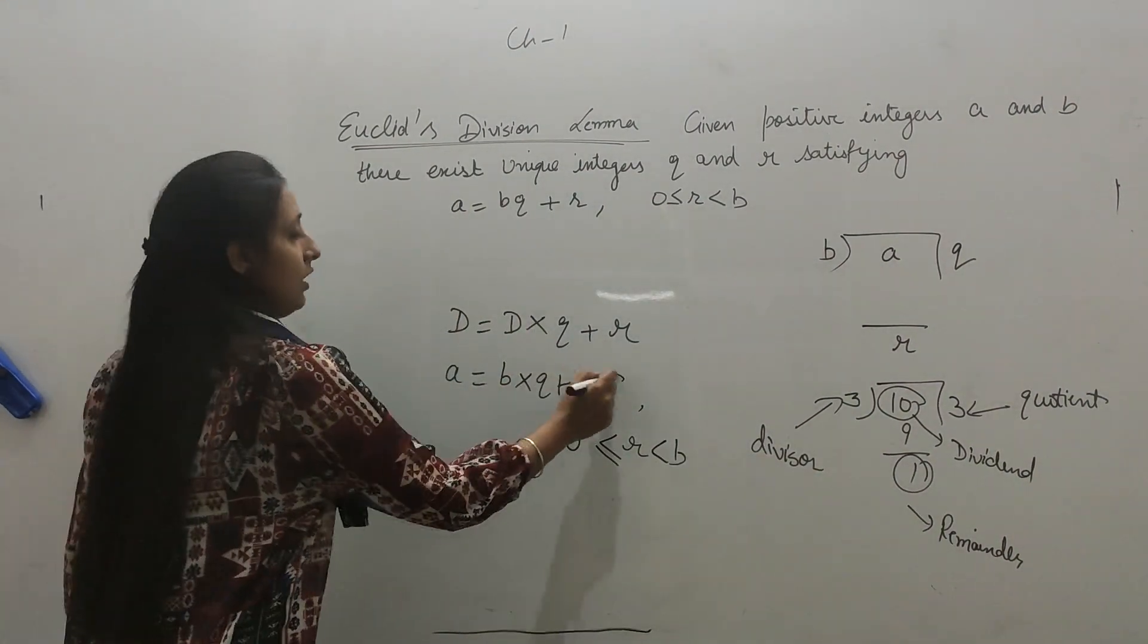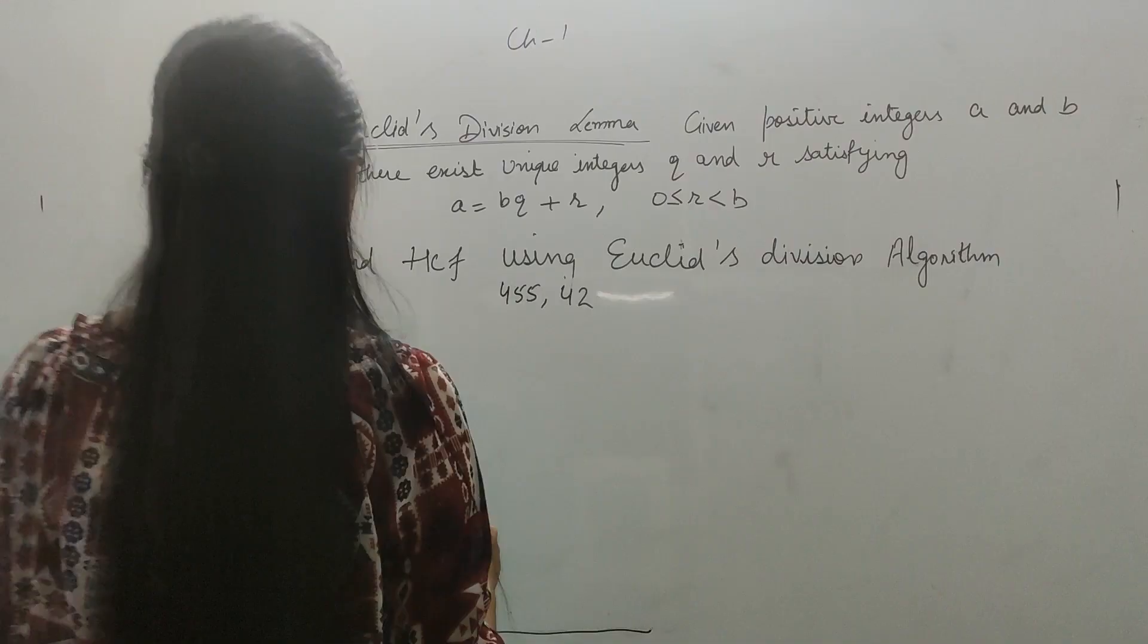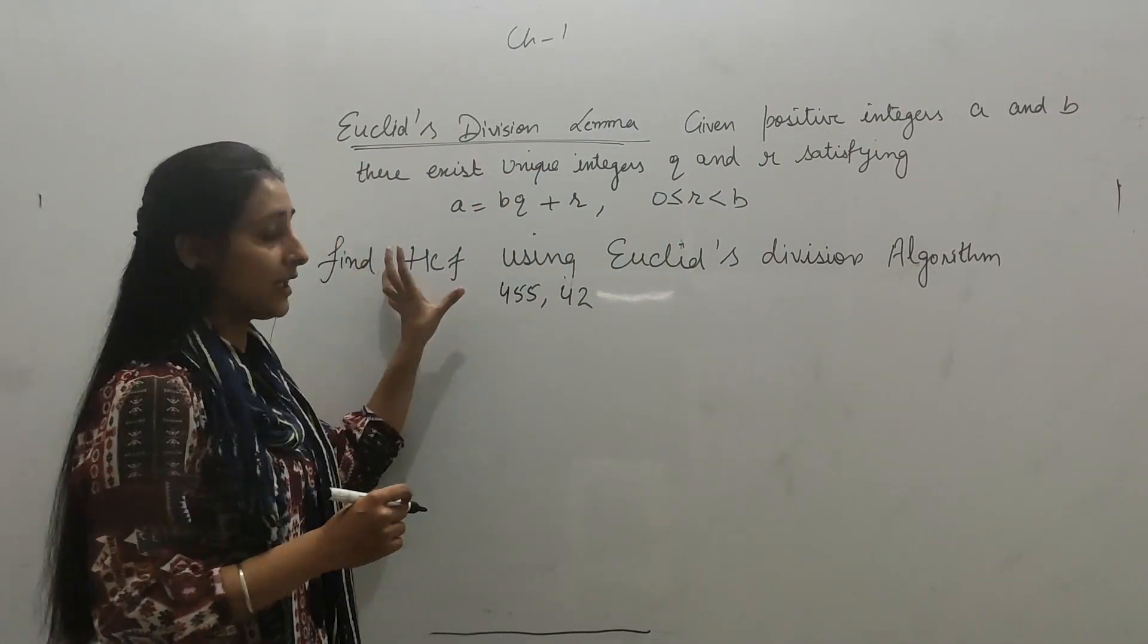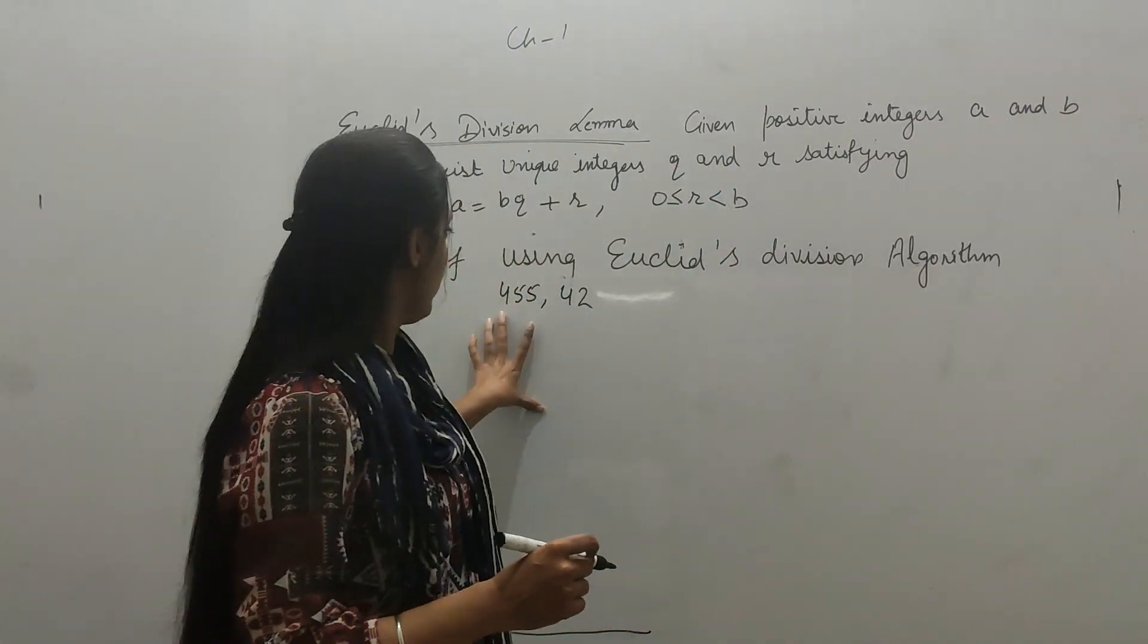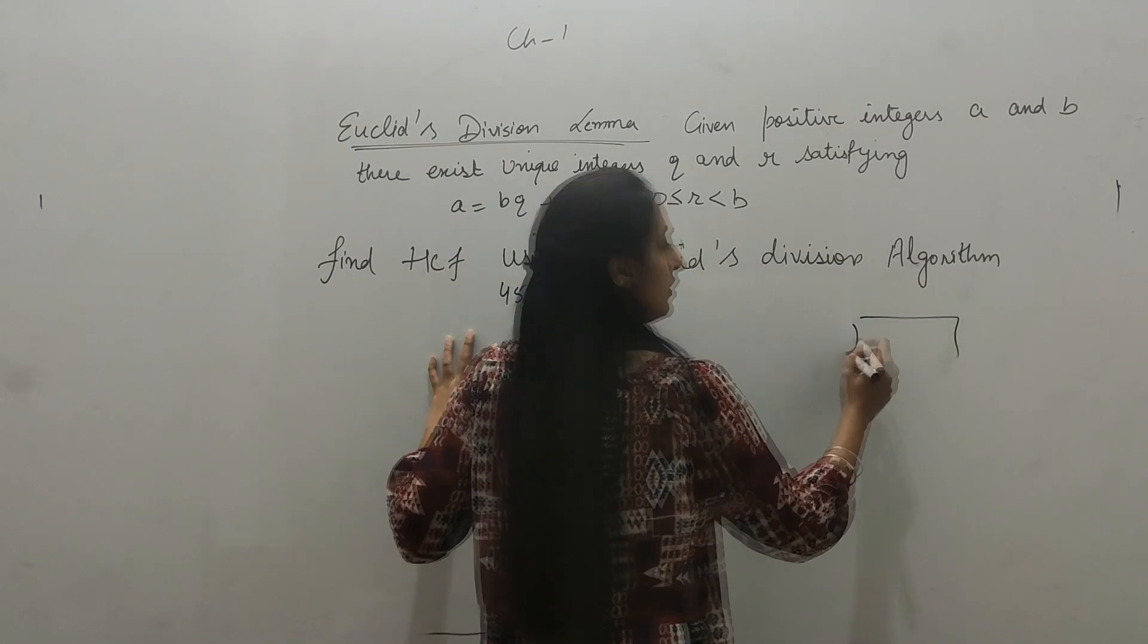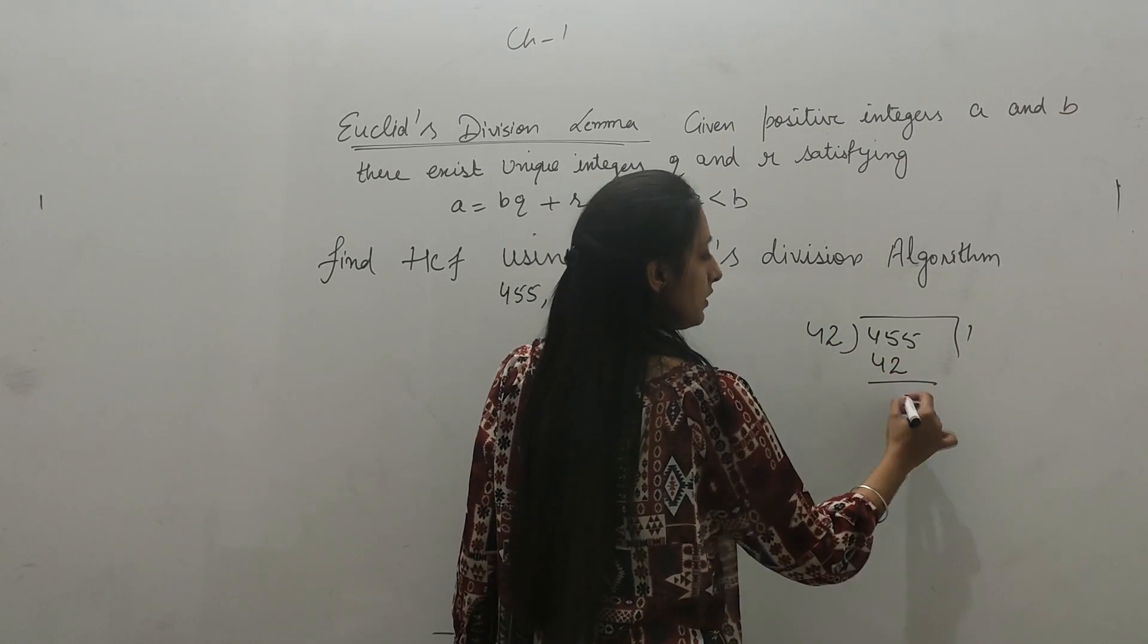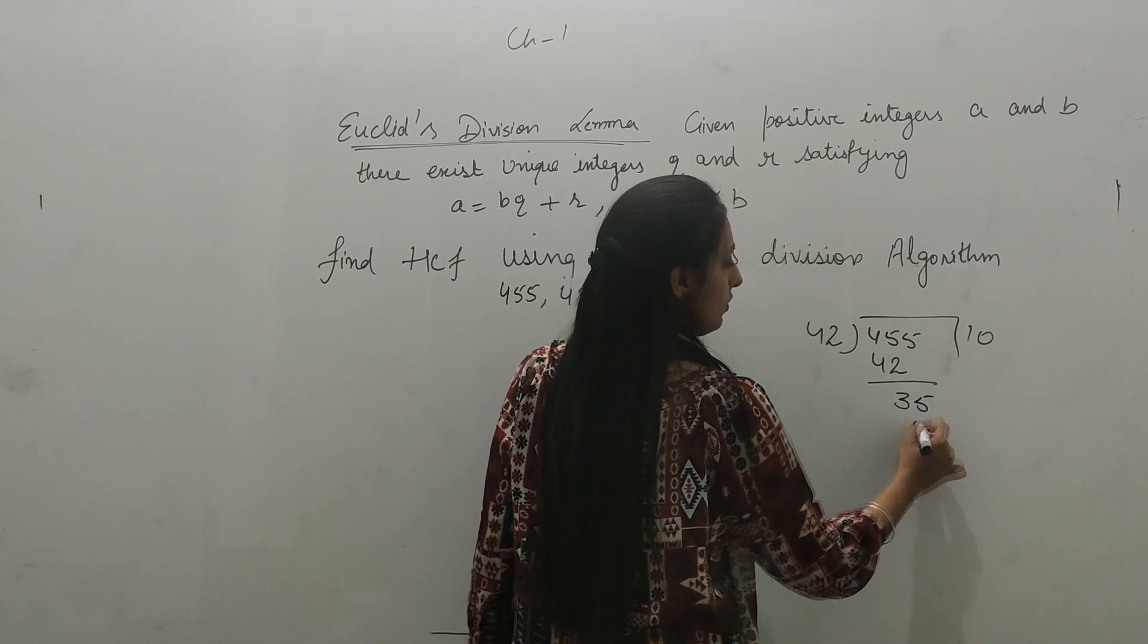So this is the Euclid's division lemma. Now we will solve the sum by using Euclid's division algorithm. The sum is find using Euclid's division algorithm the HCF of 455 and 42. We will first divide these two numbers, 455 by 42.